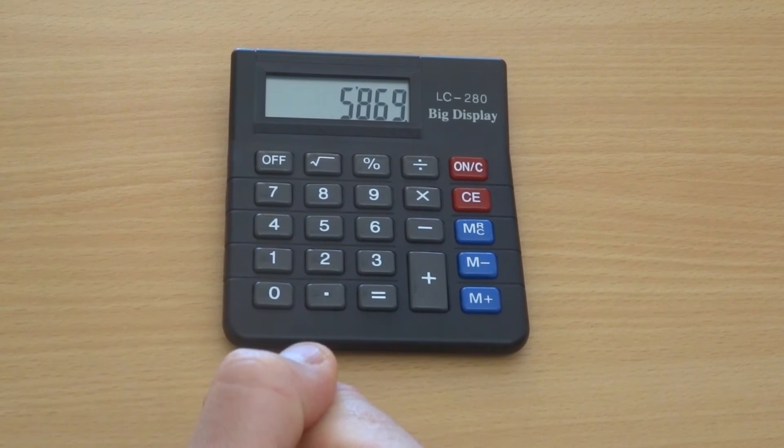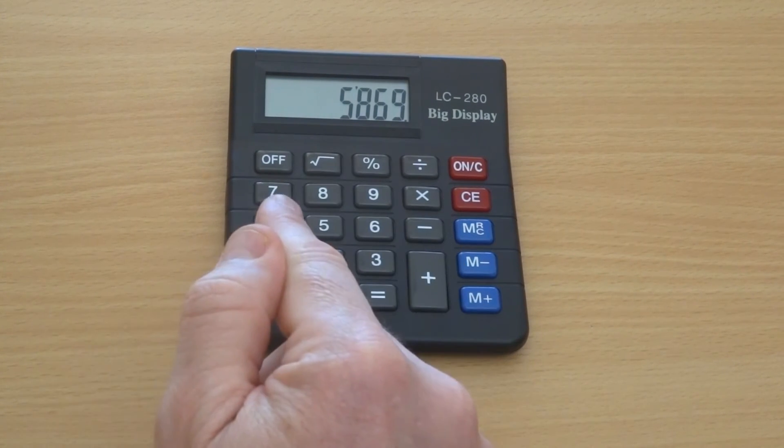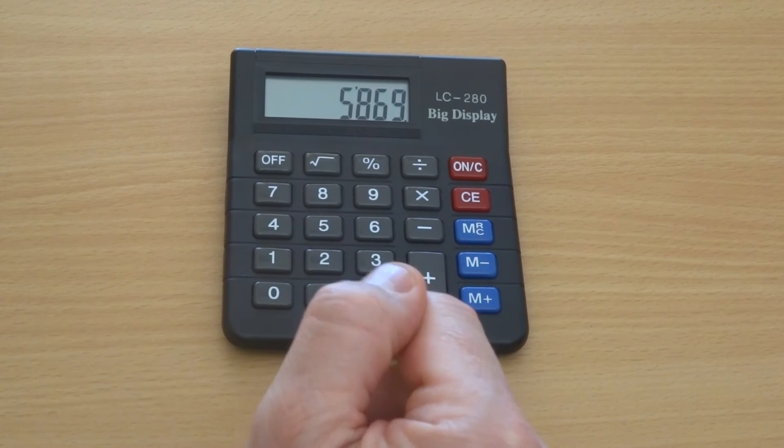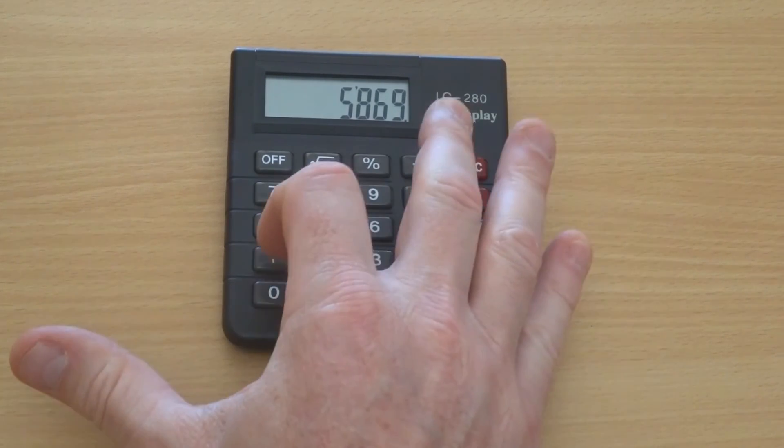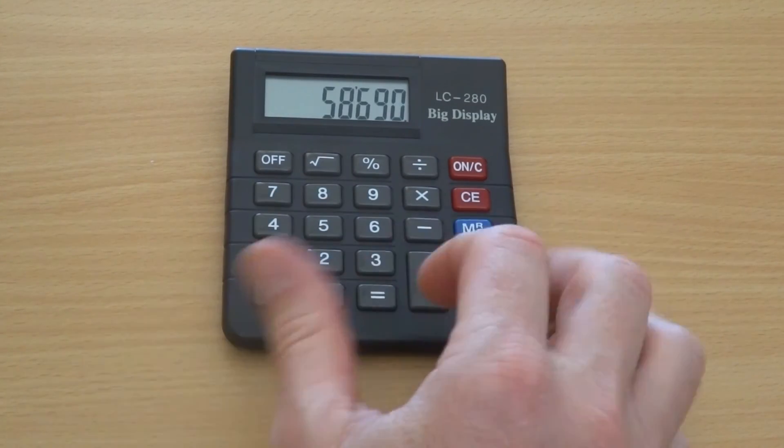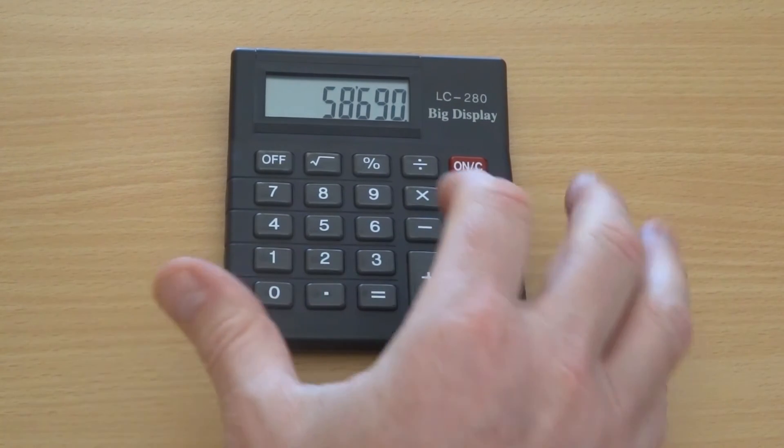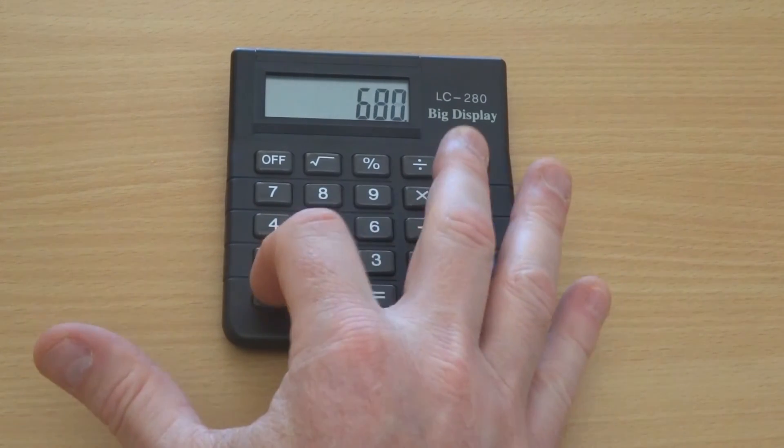So for example here, 5869, if I said to you I want to wipe out the 6, well before I can wipe out the 6 I'm going to have to multiply that number by 10 so that now the 6 is in the hundreds place, and then I'm going to subtract 600. So you can see it's a variation on that.